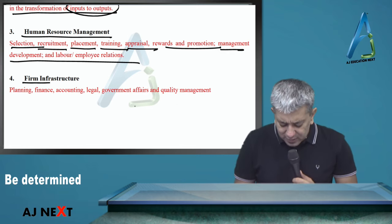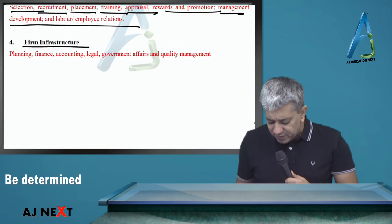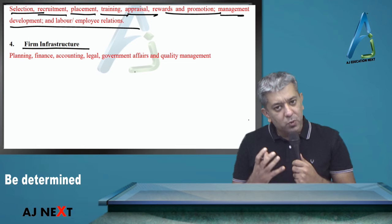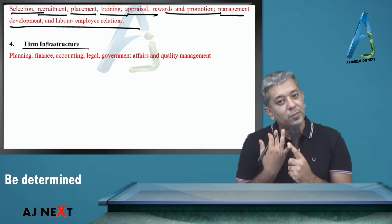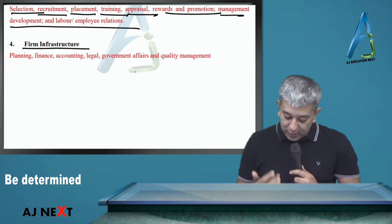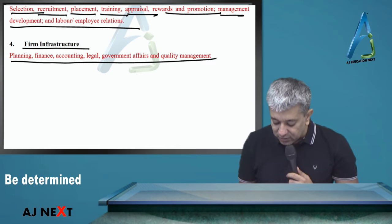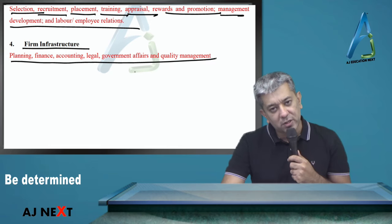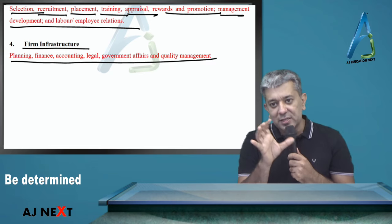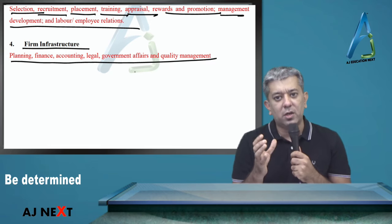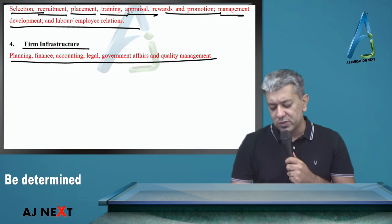And lastly, firm infrastructure. Agar aapko properly sabkuch karna hai, aapko ek legal team ki zarurat hai, accounting team ki zarurat hai, ek finance team ki zarurat hai which takes care of things. So basically this activity is all about trying to provide the proper kind of infrastructure.